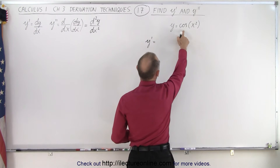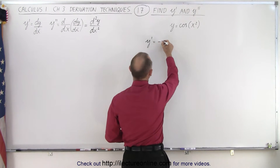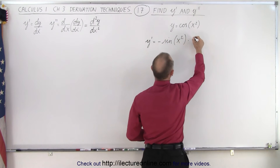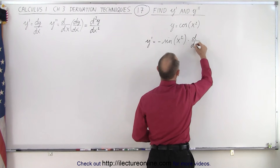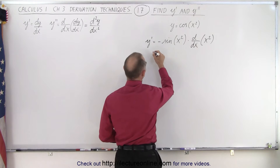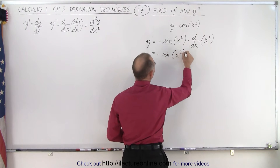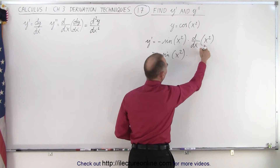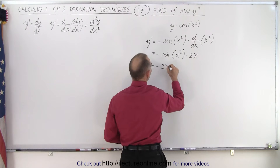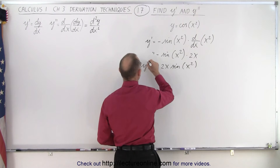So y prime is equal to the derivative of the cosine, which would be the negative sine. So we get the negative sine of that angle, which is x squared, but then we have to multiply by the derivative of the angle. So x squared like this, and this becomes equal to minus the sine of x squared times the derivative. x squared of course is 2x, and that gives us minus 2x times the sine of x squared. So that's now the first derivative.